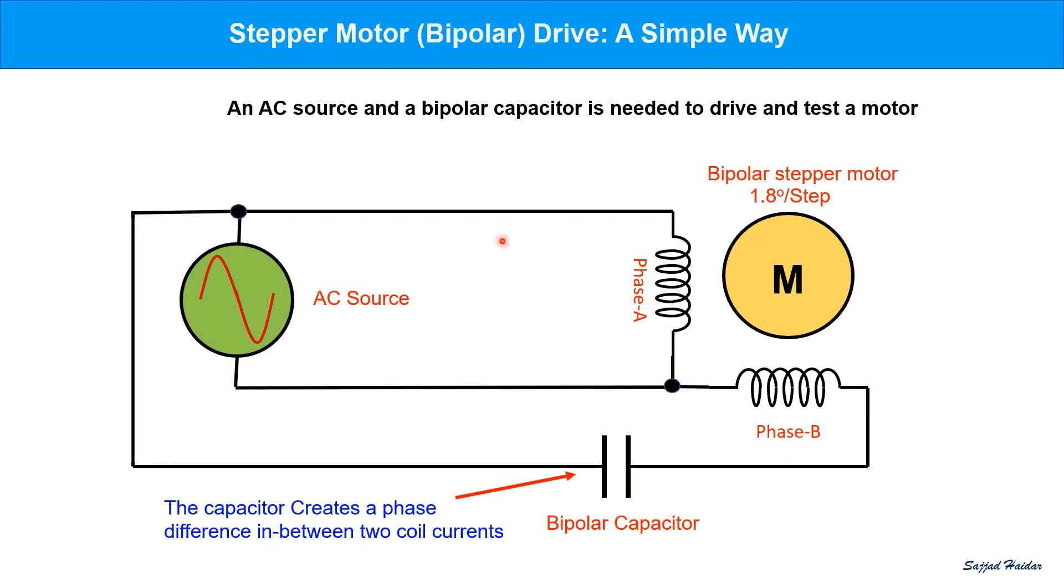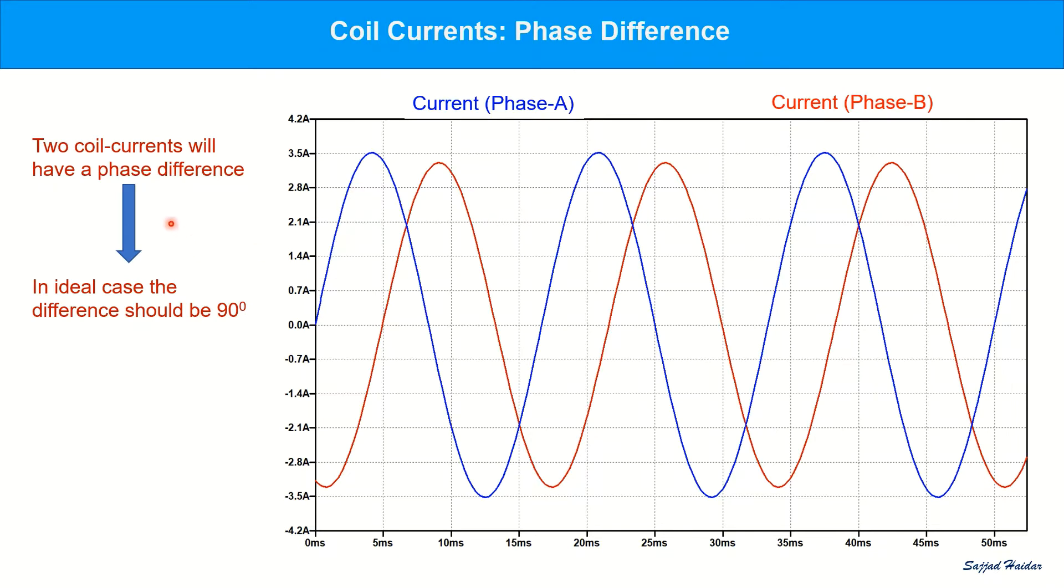The simplest way to drive a bipolar stepper motor is to use a low voltage AC source and a bipolar capacitor. One of the coils is connected directly to the AC source and other coil is connected to the source through a bipolar capacitor. The capacitor creates a phase difference in between the coils. The blue one is the current going through the coil A and the red one through coil B. And there is a phase difference between these two.